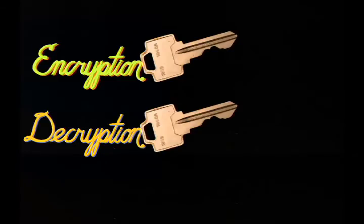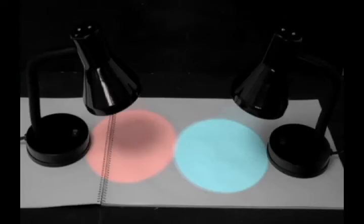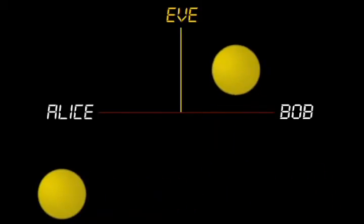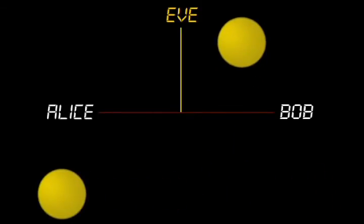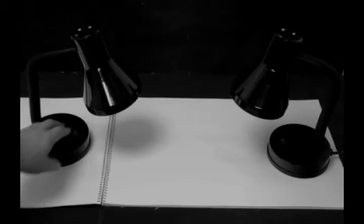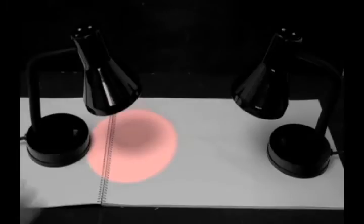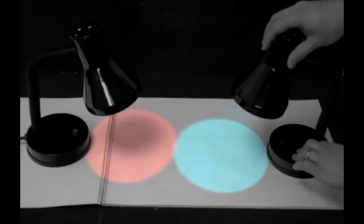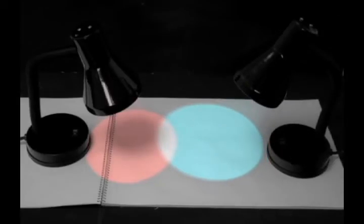To see how inverse keys could work, let's do a simplified example with colors. How could Bob send Alice a specific color without Eve, who is always listening, intercepting it? The inverse of some color is called a complementary color, which when added to it produces white, undoing the effect of the first color.